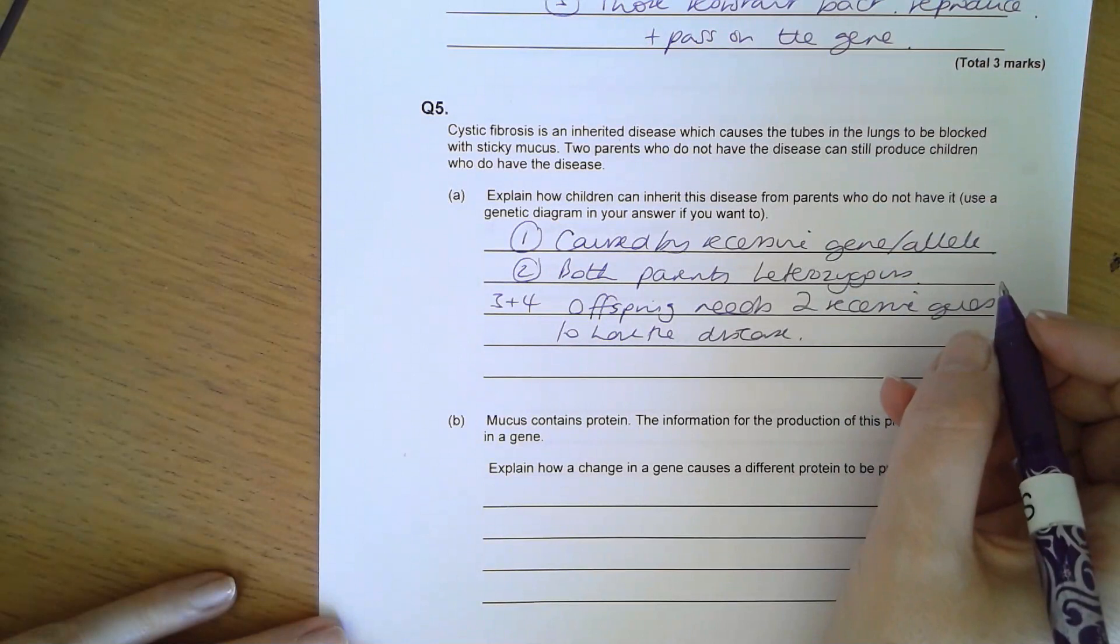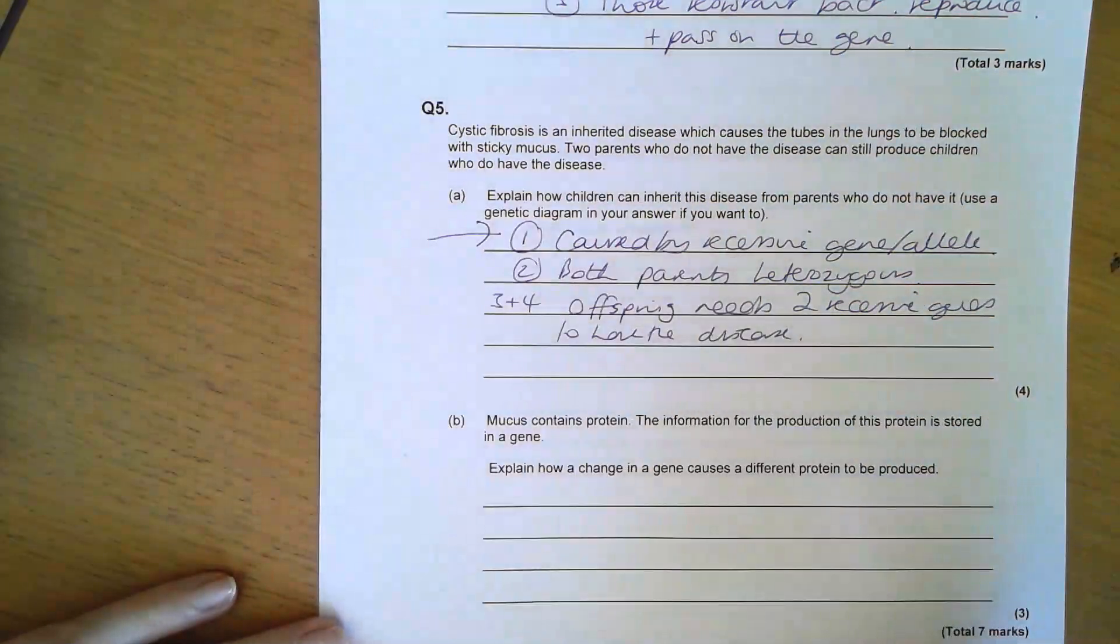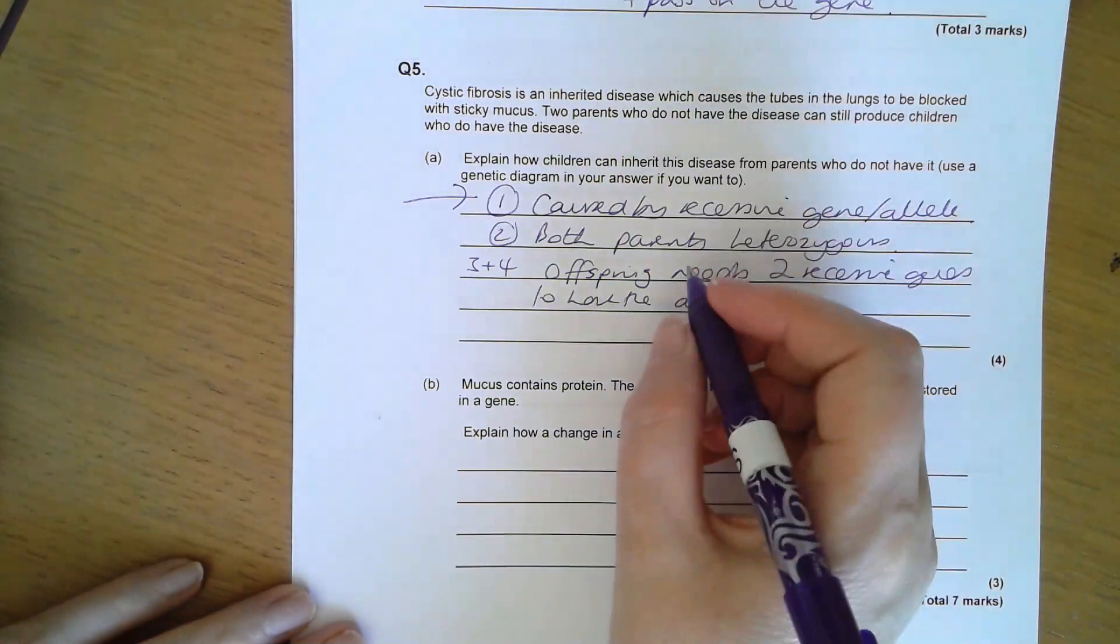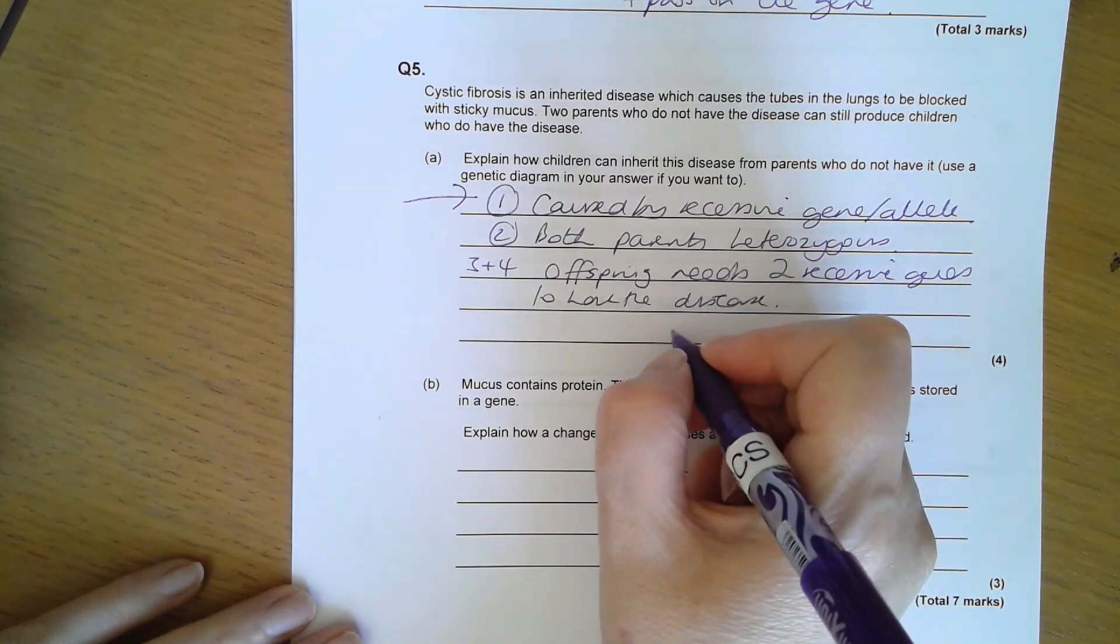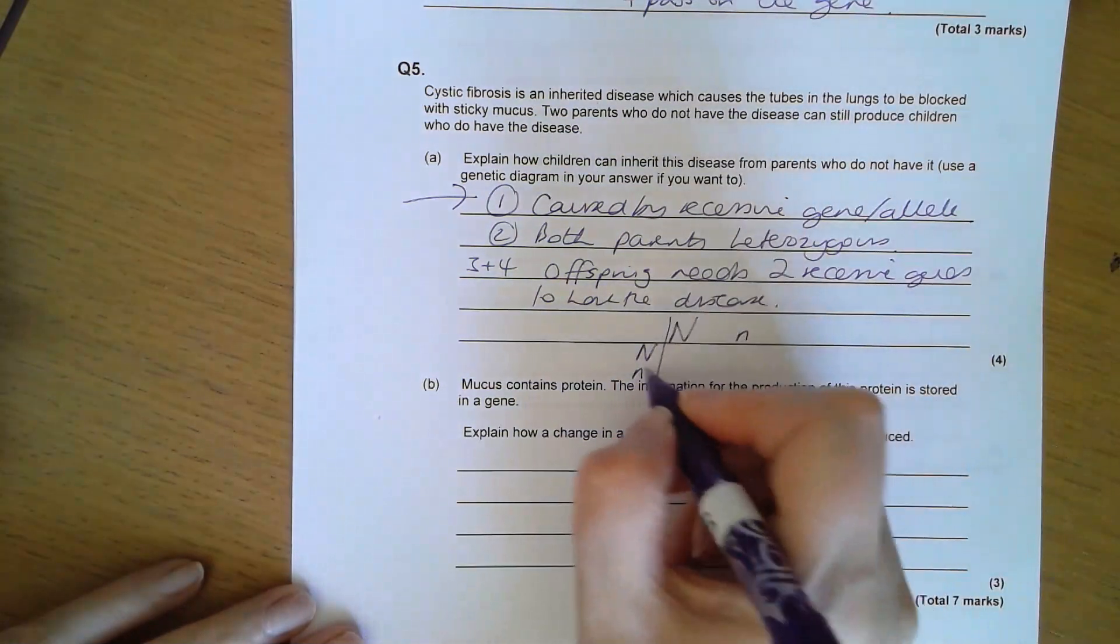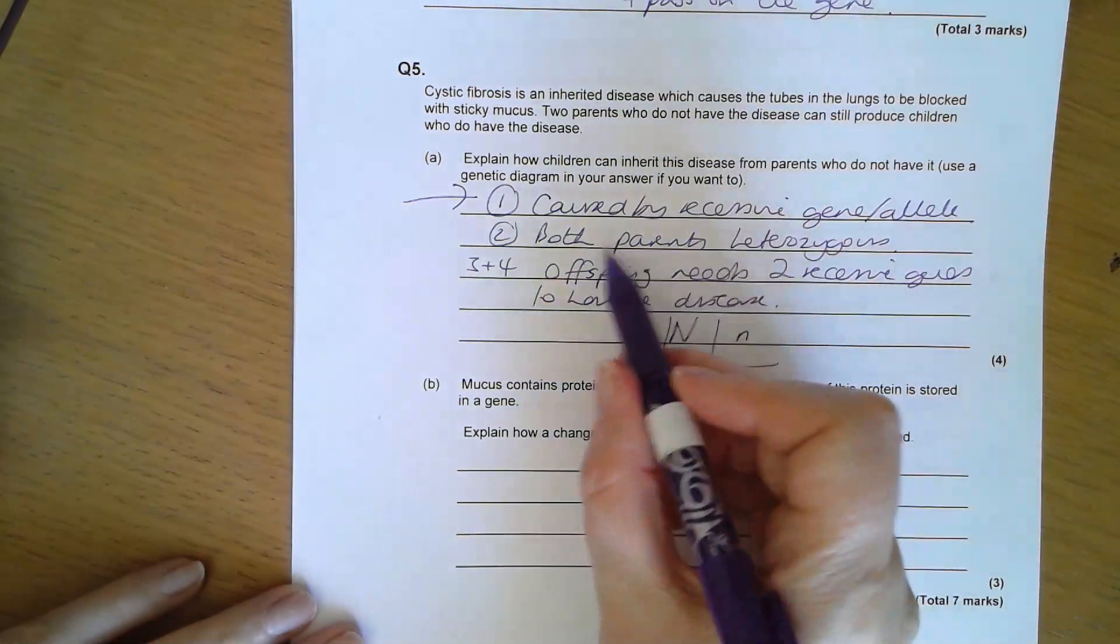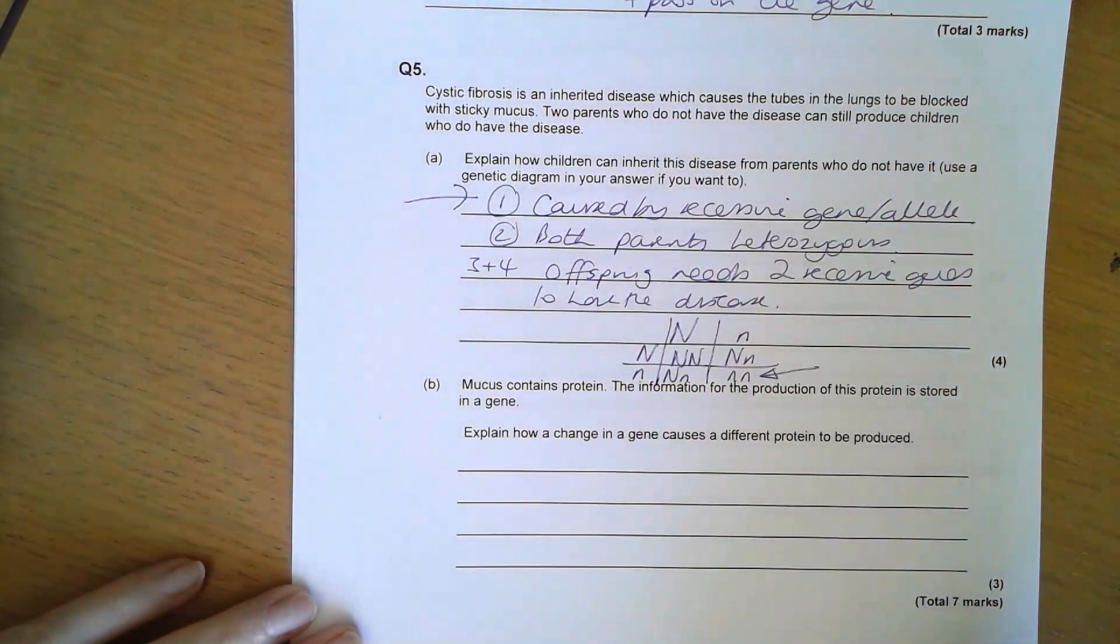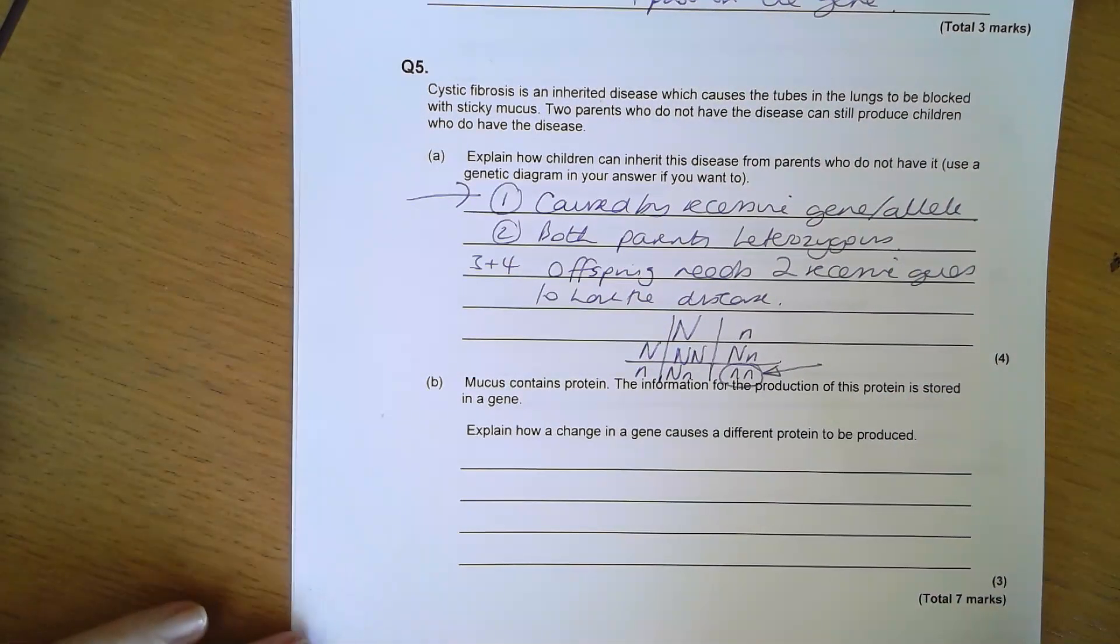I strongly suspect a lot of you actually have just done a genetic cross for this. For the first mark, you still need to point out that it's caused by a recessive gene. Then you would get a mark for showing two heterozygous parents, and do your cross. The third and fourth marks are for clearly showing that it's the one with the two recessive genes that has cystic fibrosis.